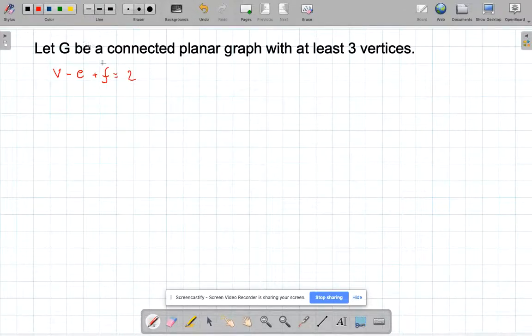And the spin-off we're going to look at is that edges are always less than or equal to 3V minus 6. And this is going to help us to prove why we can't have K5 as a planar graph. But first of all, I'm going to prove this to you.